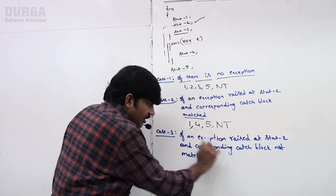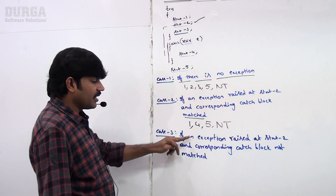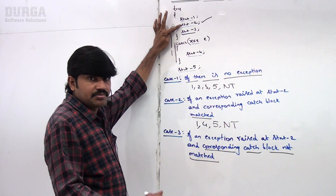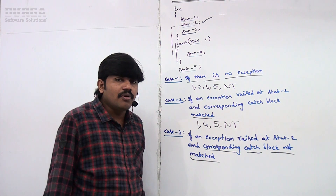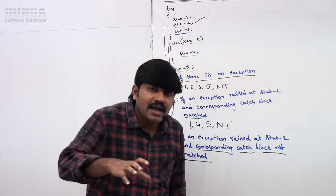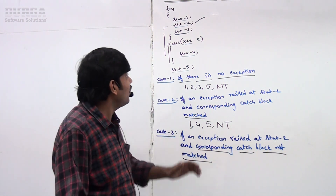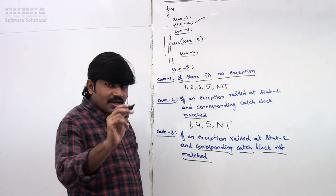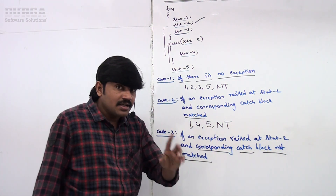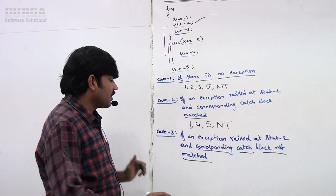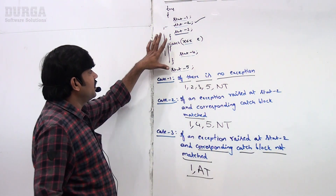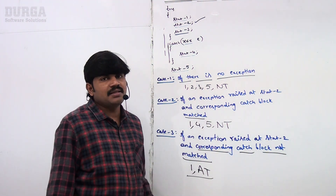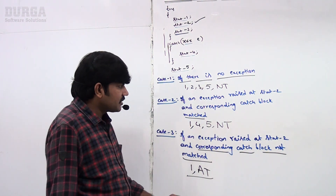Case three: if an exception rises at statement two and the corresponding catch block does not match. The exception raised is an arithmetic exception but the catch block is for null pointer exception. The problem rising is a heart problem but the doctor available is an eye specialist. So there is no corresponding catch block matched — it is always abnormal termination. That's why: one executes, followed by abnormal termination. Remaining code never goes to execute.